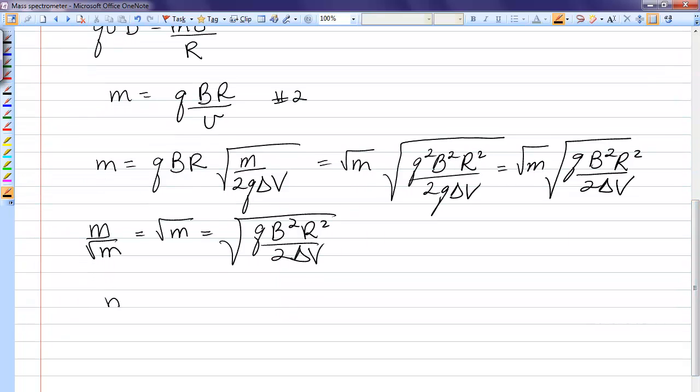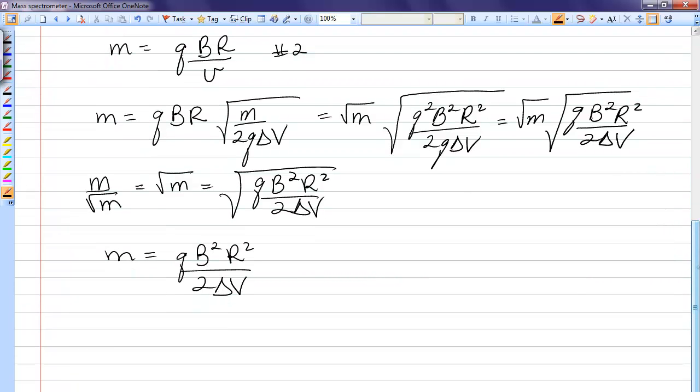Squaring both sides, I get the mass as a function of charge, magnetic field, radius, and voltage. Now, what this problem asks is the ratio of the masses of two particles given different charges and different radii.